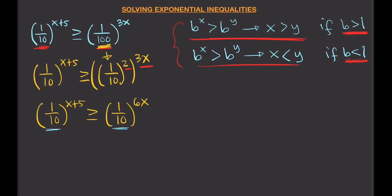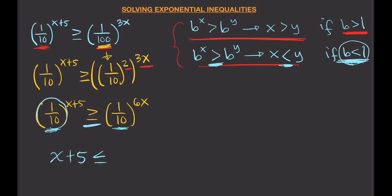Now we bring down the exponents, but remember: b = 1/10 is less than 1, so we have to invert the direction of the inequality. If it is greater than or equal, when you bring down the exponents it becomes less than or equal. So instead of greater than or equal, we write less than or equal.